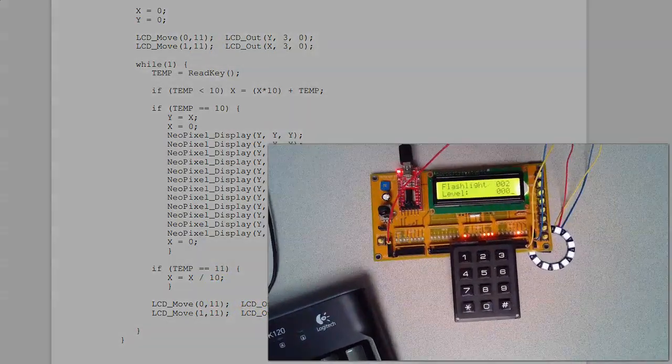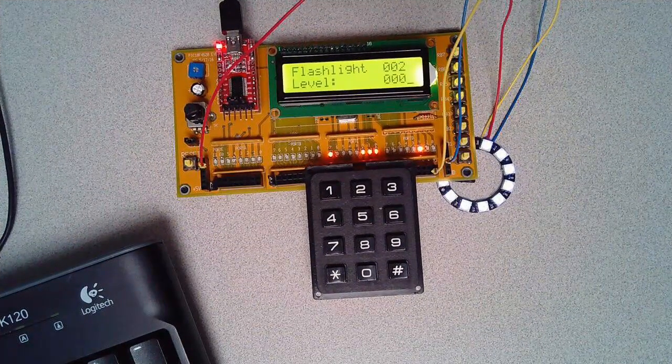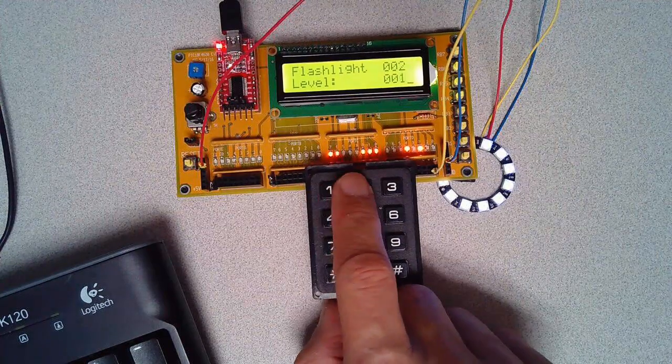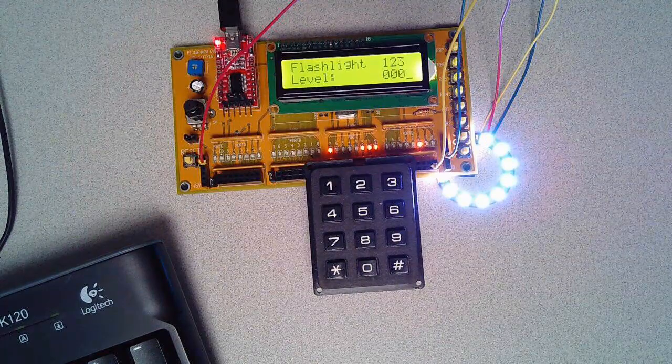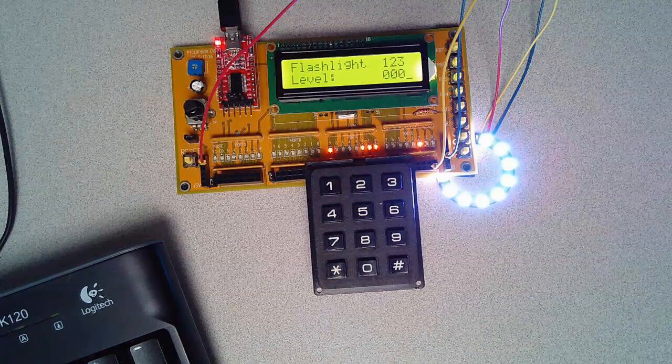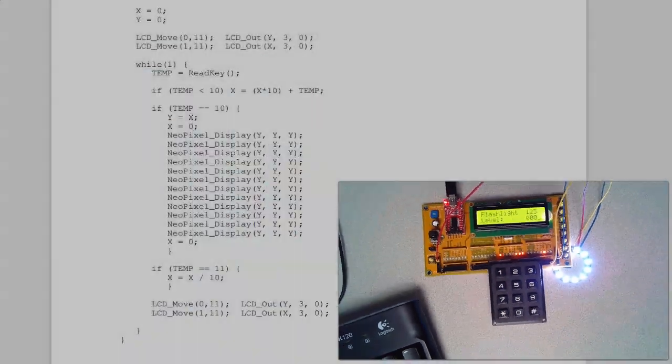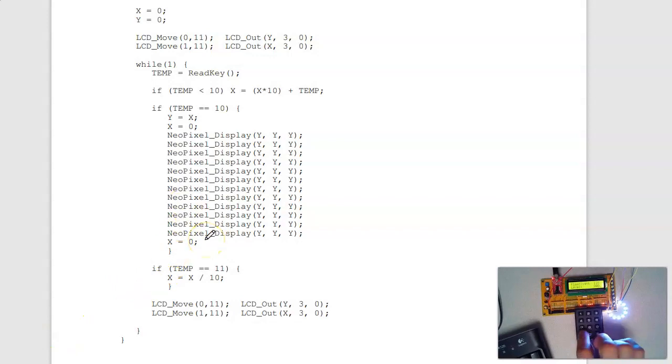So this is kind of where the LCD is kind of nice. I can sit there and check. Does my keypad work? If that works, can I push that onto the stack? Push that onto y. If that works, can I copy y to the NeoPixel? Going step by step. And it's not too bad to write the code.